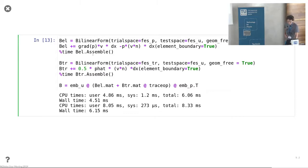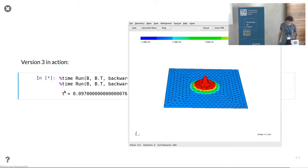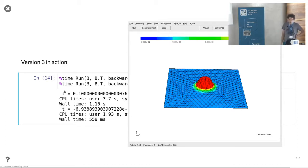Now we assemble the matrices, but these matrices are represented by just a few element matrices due to these classes that Joachim already discussed. Now the application is almost a factor 10 faster than what we had before.